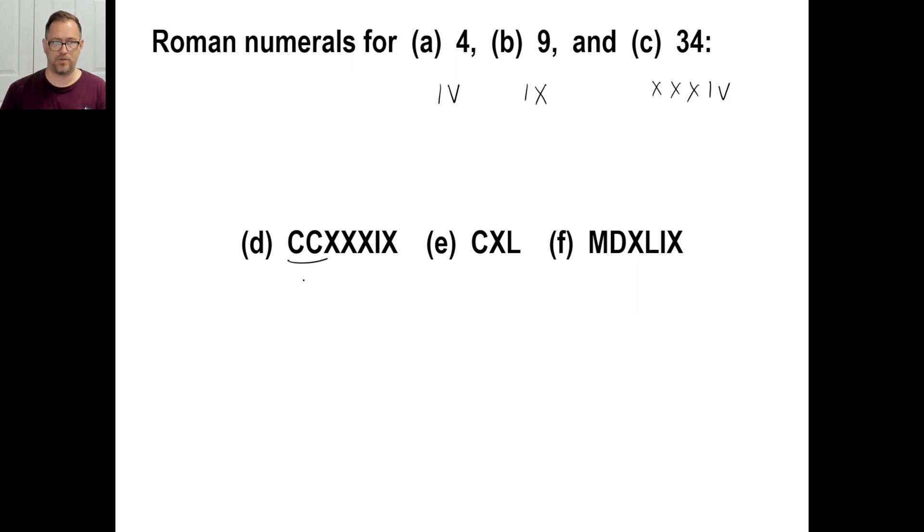D, let's take a look at this. That's going to be two hundred. This will be thirty. And this will be one subtracted from ten, or nine: two thirty-nine. This one, that's a hundred. X is less than L. So that means it's being subtracted from that. So that is ten subtracted from fifty, which will give us one forty: C X L. And F, I've got my thousand there. That's five hundred. This part here means ten subtracted from fifty, that's forty. And this means one subtracted from ten, which is nine: fifteen forty-nine.